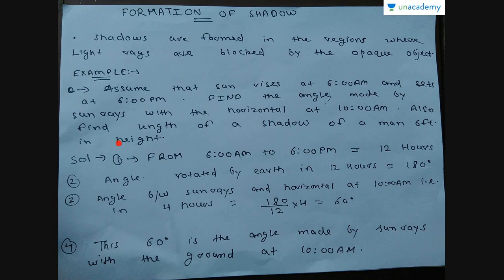To solve this: from 6 am to 6 pm, 12 hours have passed, and the angle rotated by the earth in 12 hours equals 180 degrees. From 6 am to 10 am, 4 hours have passed. The angle rotated by the earth in 1 hour equals 180/12 = 15 degrees, so in 4 hours: 15 × 4 = 60 degrees. This 60 degrees is the angle made by the sun rays with the ground at 10 am.